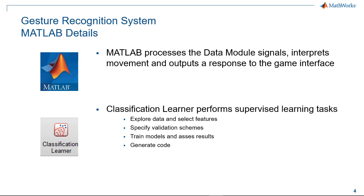There are two software pieces used within the system. MATLAB processes the data module signals, interprets movement, and outputs a response to the game interface. Within Statistics and Machine Learning, there's an application called Classification Learner. This does exploration of the data, allows you to specify a validation scheme, helps train a model, assess results, and then ultimately you're generating code for the main program.